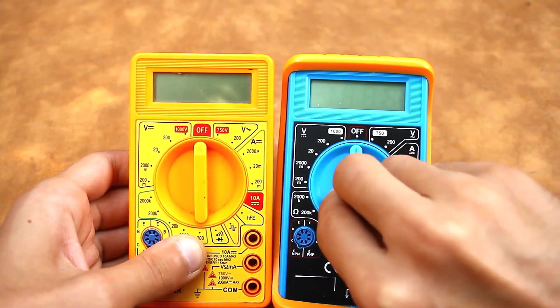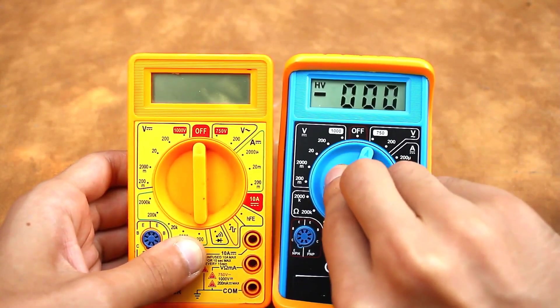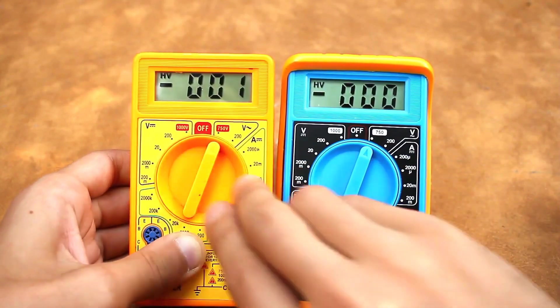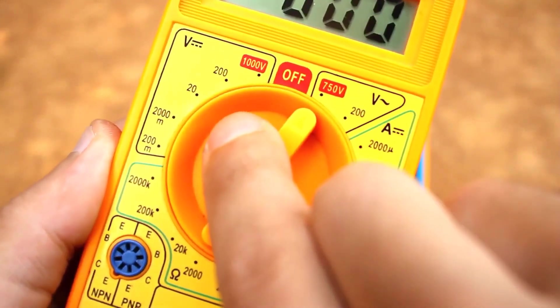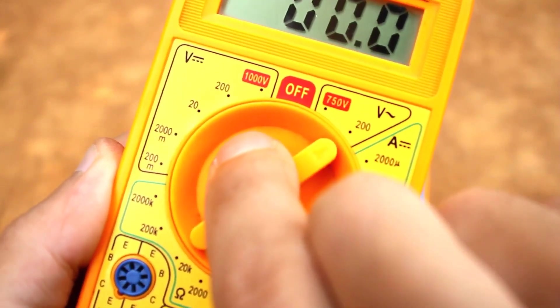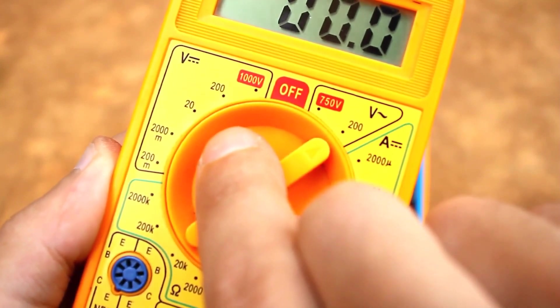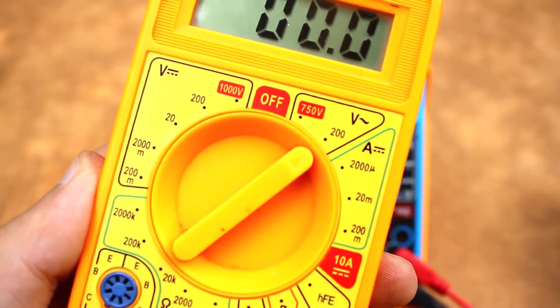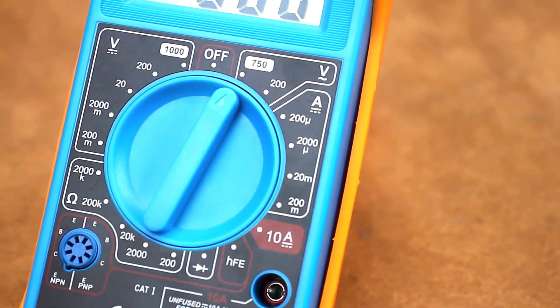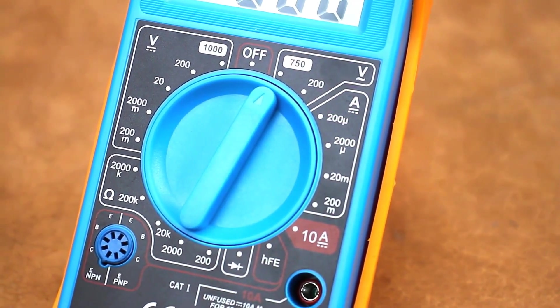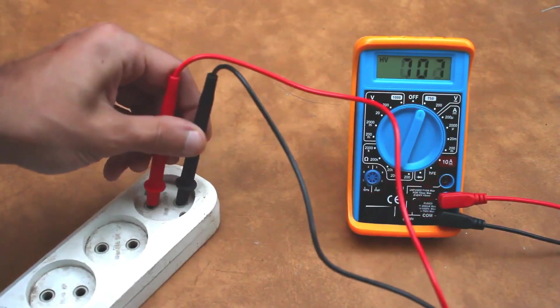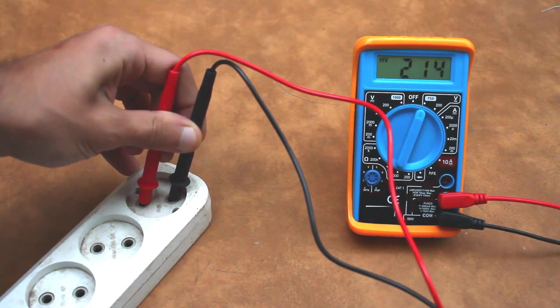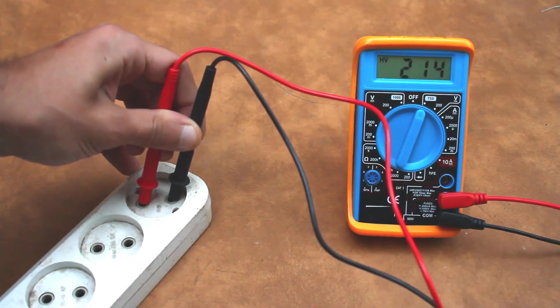In the case of measuring alternating voltage, it is necessary to switch to the appropriate range. In the popular DT830 multimeter, there are two ranges available for measuring alternating voltage up to 200V and up to 750V. Set it to 750. Insert the probes into the outlet. There's no need to worry here, as there is no polarity, and even if you try hard, you won't mix anything up.